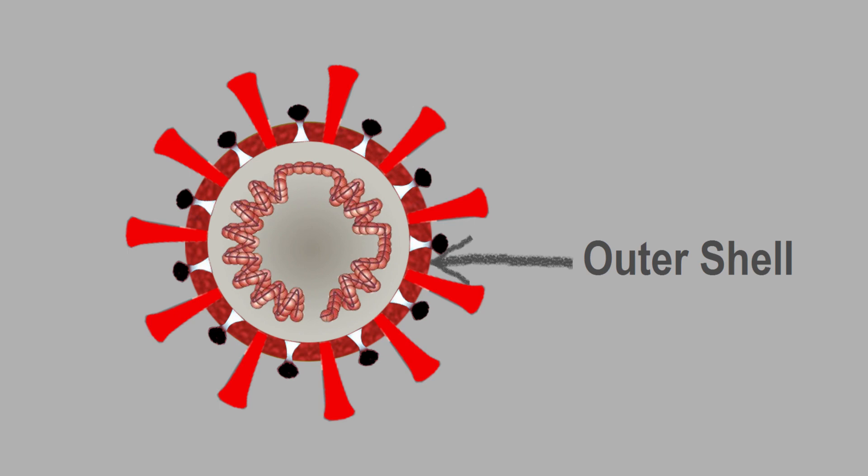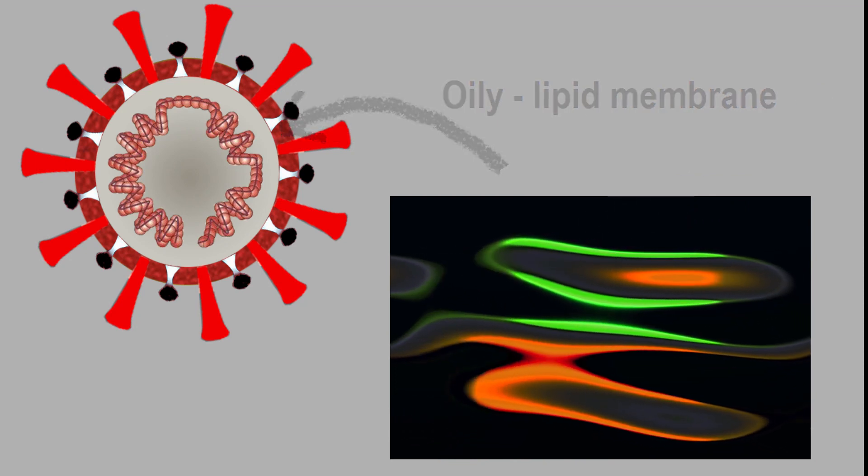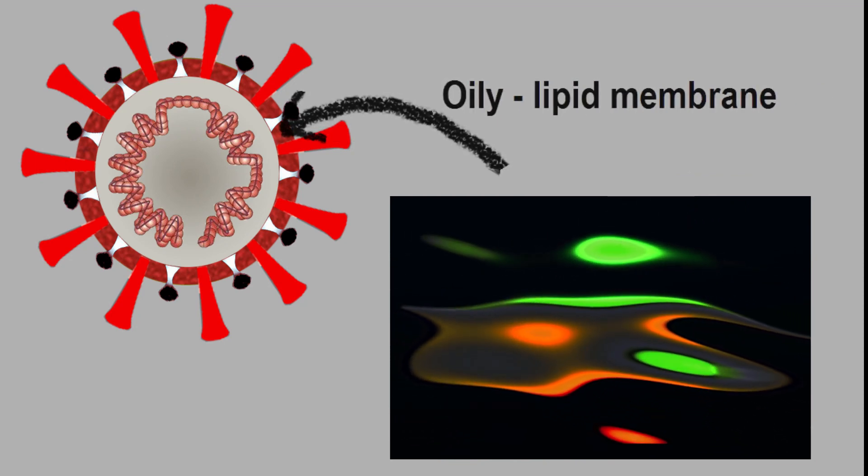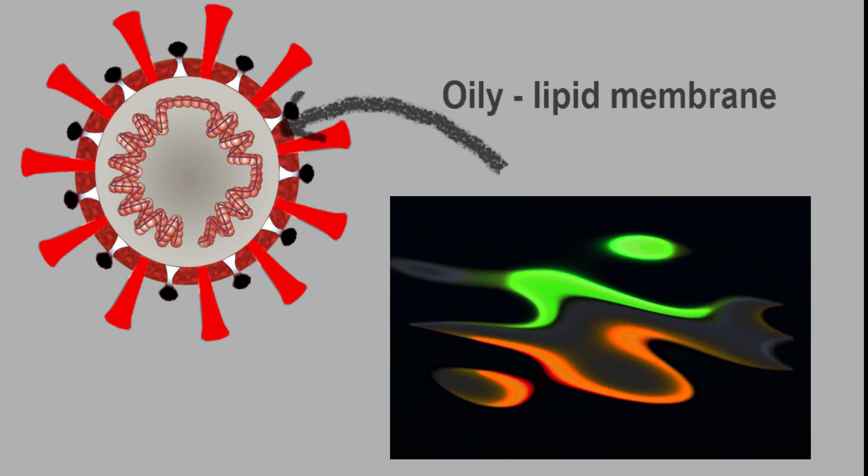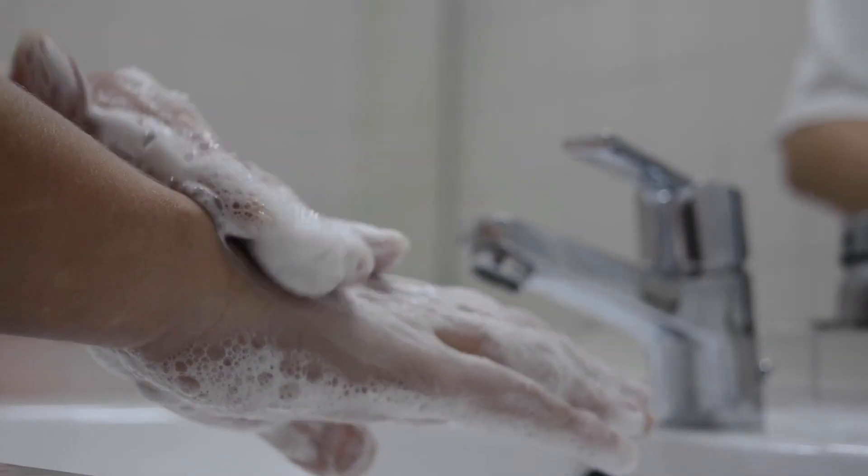This outer body is made of bubble-like oily lipid molecules. You can compare it with fat or oil. While fats can fall apart by soap, when you wash your hands with soap, this oily body of coronavirus breaks down.